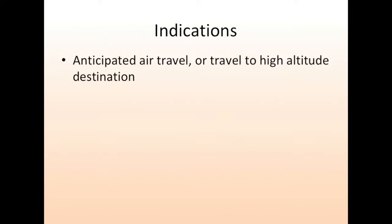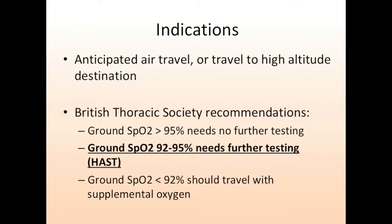For patients with pulmonary disease who ask if it is safe to travel, it is important to ask them if they are flying or if they are traveling to an area at high altitude where there is concern that they might desaturate. The British Thoracic Society provides guidelines to help answer this question. They recommend obtaining an SpO2 on the ground. If it is greater than 95%, then no further testing needs to be done. If the SpO2 is less than 92%, then they should travel with supplemental oxygen regardless. If the SpO2 is between 92% and 95%, then further testing needs to be done, such as performing a high-altitude simulation test.